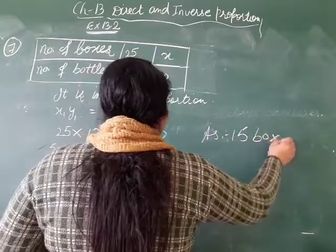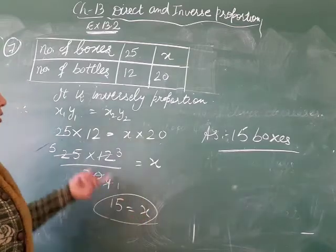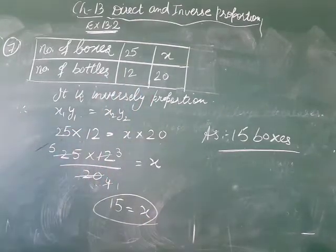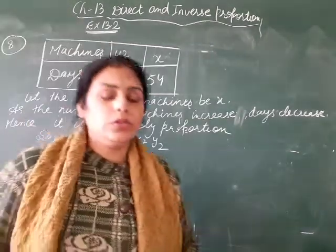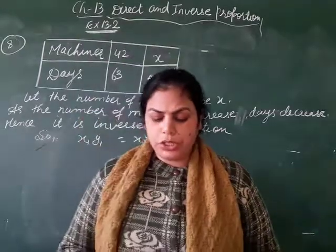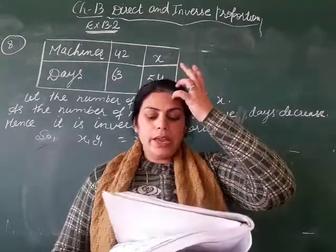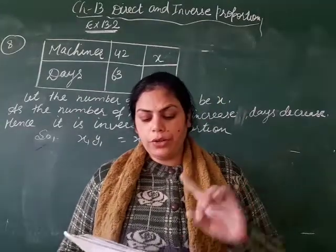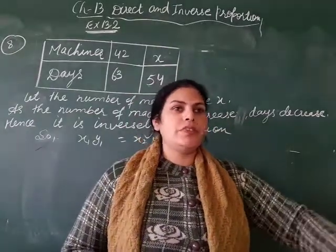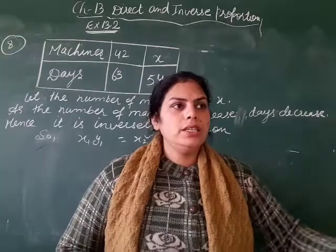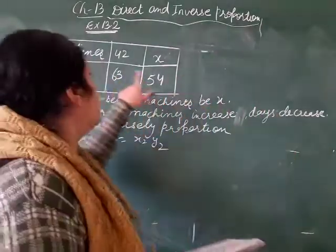Clear? So question 8 is: a factory requires 42 machines to produce a given number of articles in 63 days.